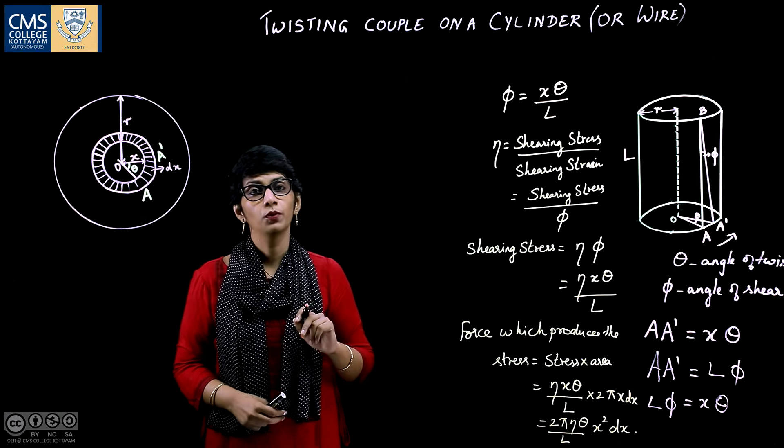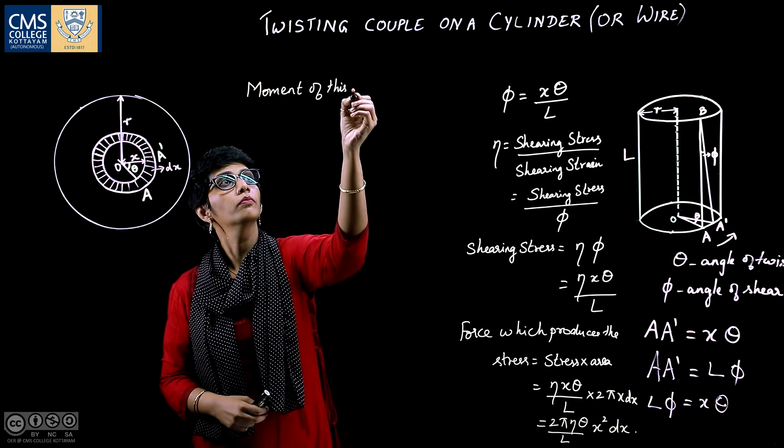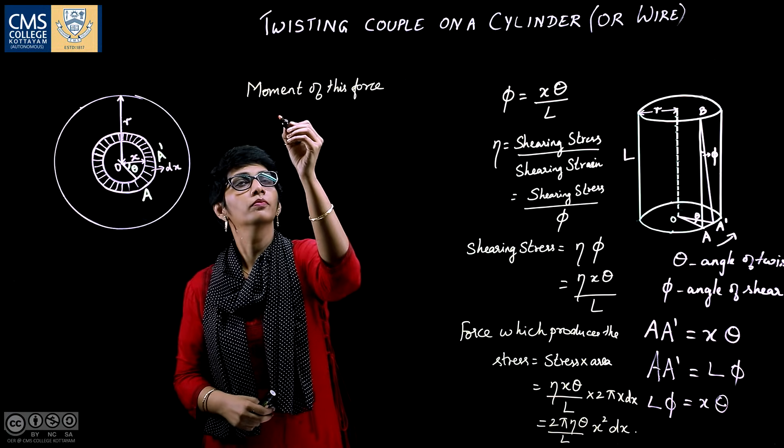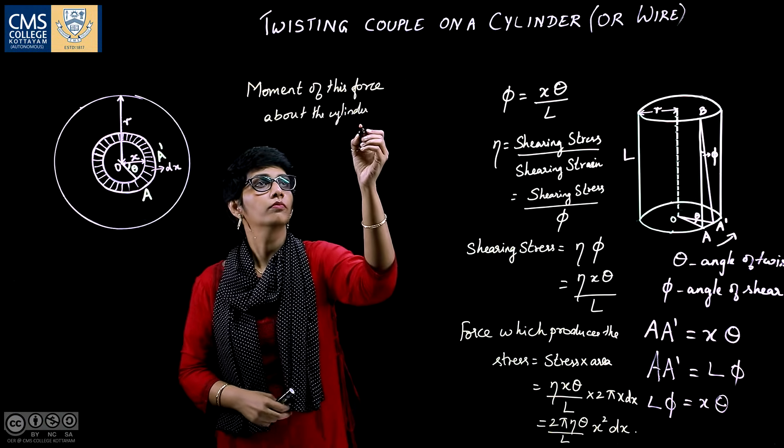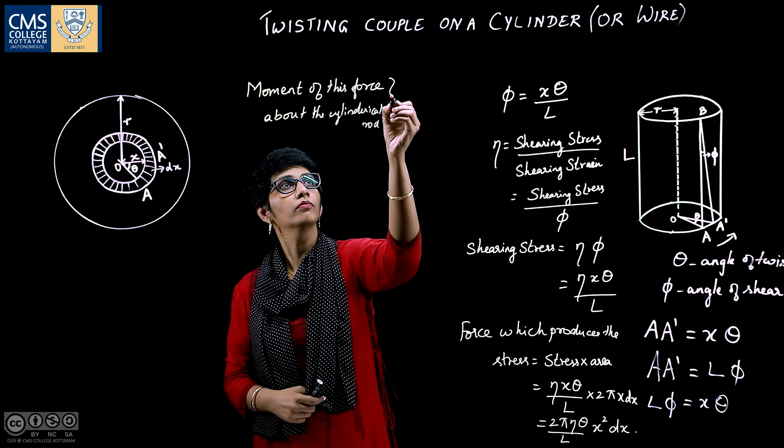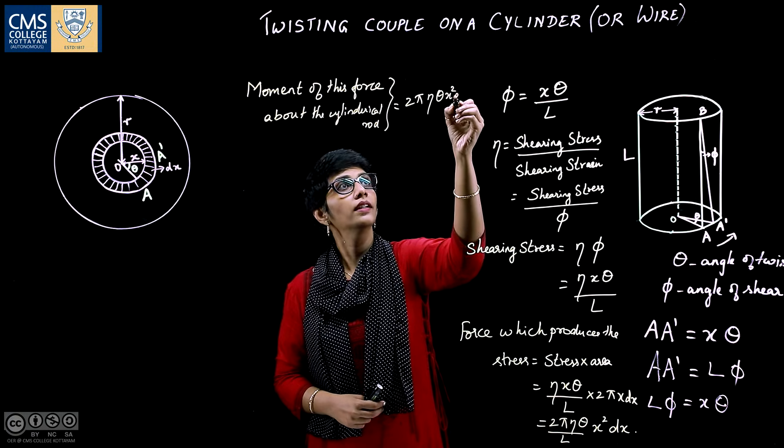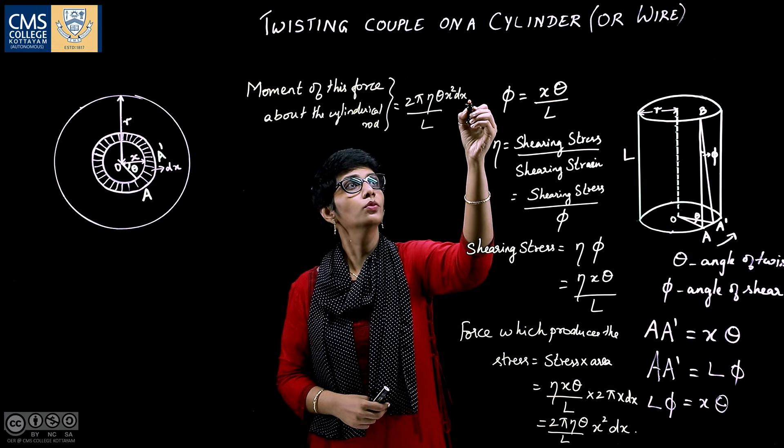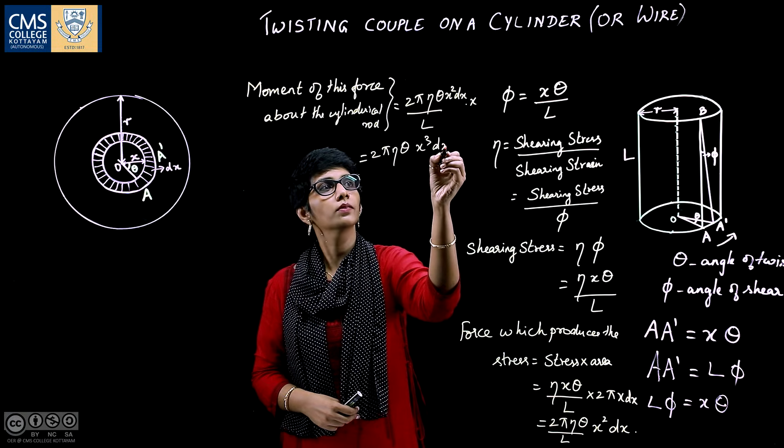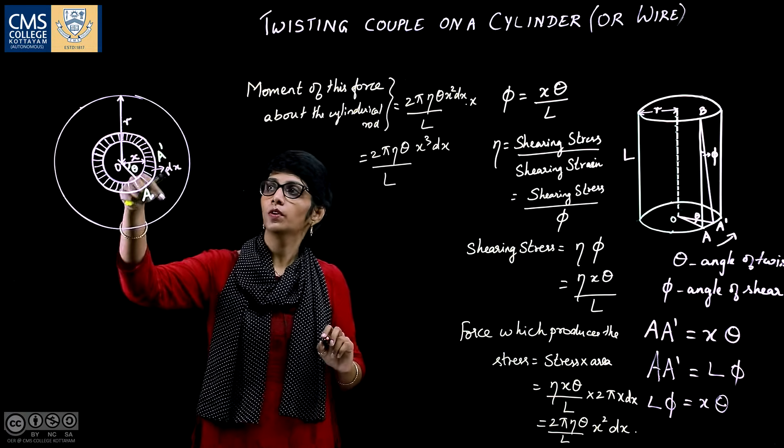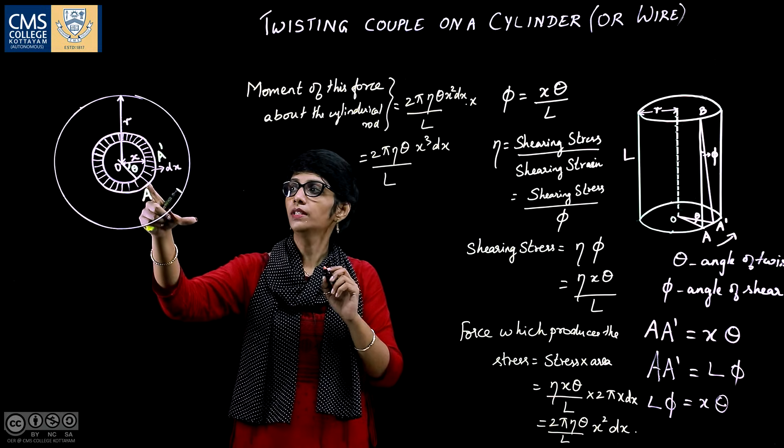The moment of this force about the cylinder is 2 pi eta theta x squared dx by L into x. So this is equal to 2 pi eta theta x cubed dx by L. This is just for this hollow cylinder. For the entire cylinder we need to integrate between limits 0 to R.